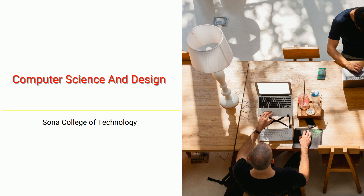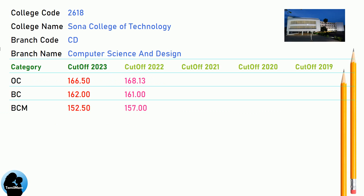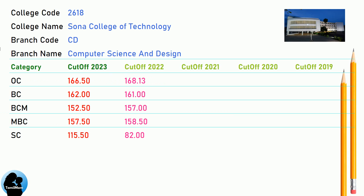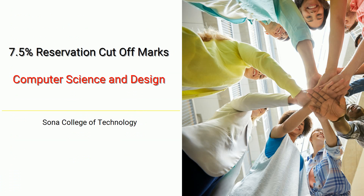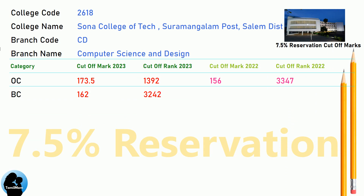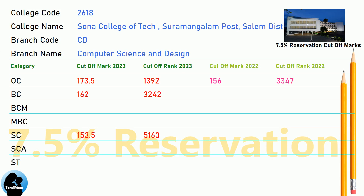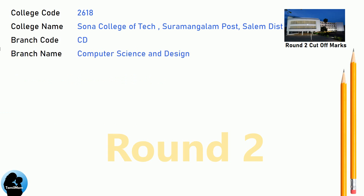DNA cut-off for Sona College of Technology in Computer Science and Design. DNA 7.5 Reservation cut-off for Sona College of Technology in Computer Science and Design. DNA Round 2 cut-off for Sona College of Technology in Computer Science and Design.